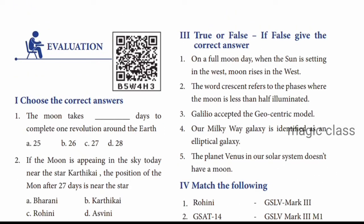Next is true or false. Question 1: On a full moon day, when the sun is setting in the west, the moon rises in the west. We already studied this. On a full moon day, you can see the moon in the sky. When the sun sets in the west, the moon rises in the east. So the answer is false - the moon will rise in the east.